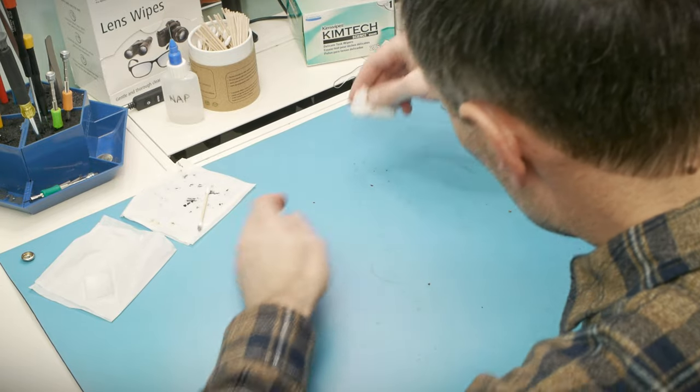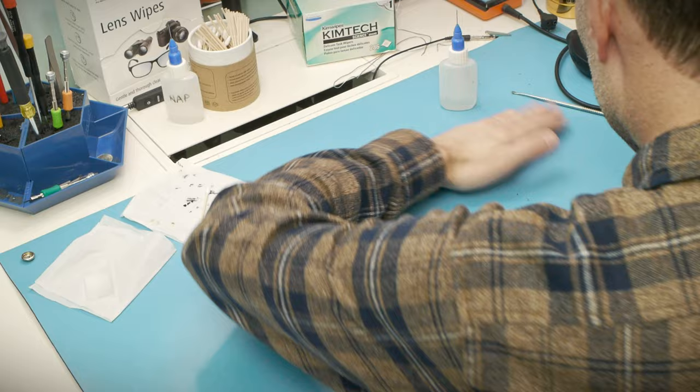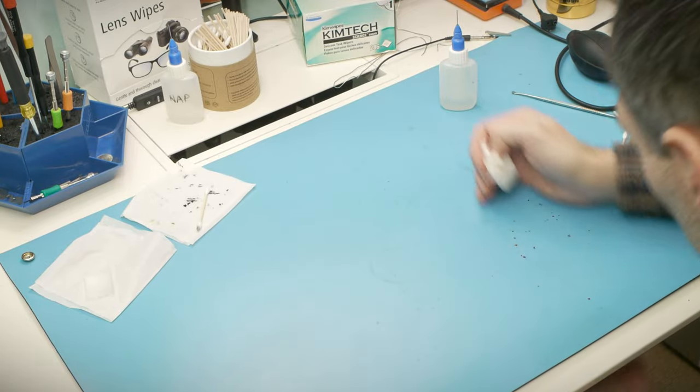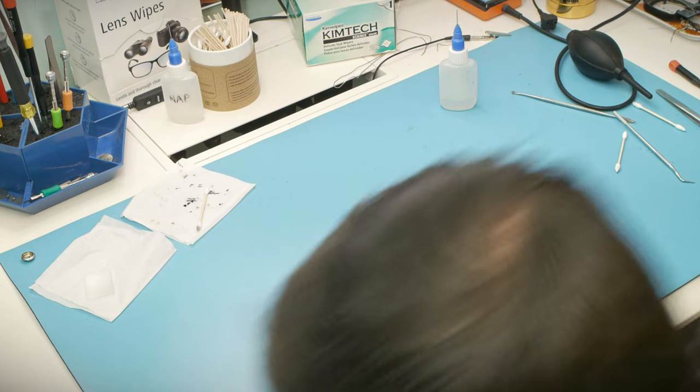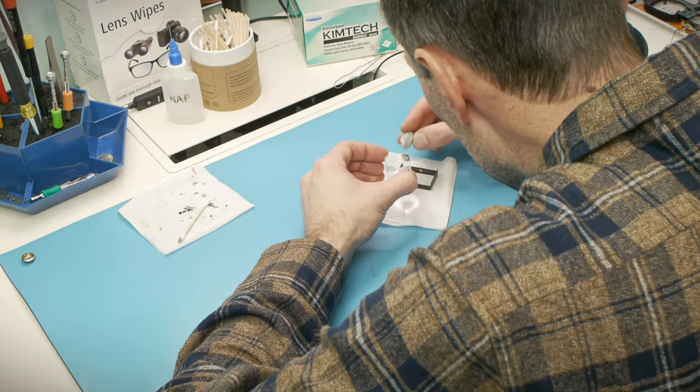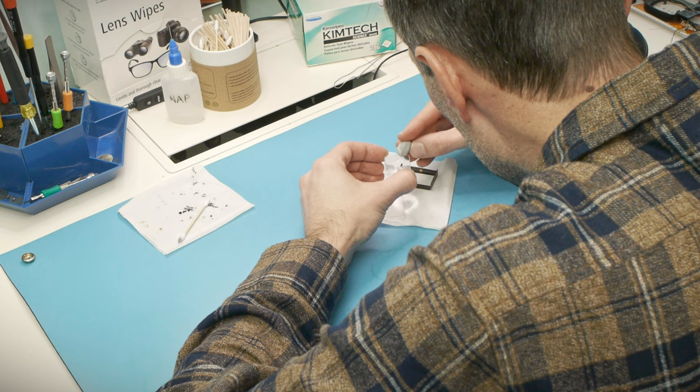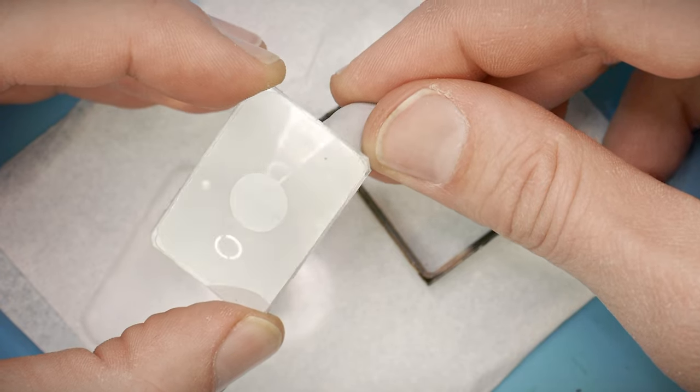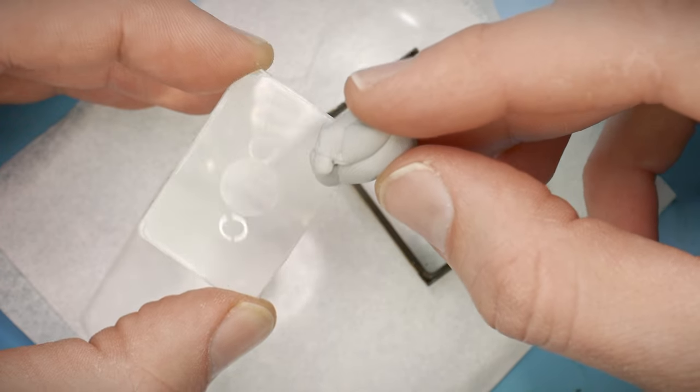The Fresnel lens in particular is very fragile and difficult to clean. They're usually made of acrylic, which reacts poorly to most solvents like isopropyl alcohol. If I tried to clean this screen like I've cleaned everything else so far, it would turn into a foggy mess.